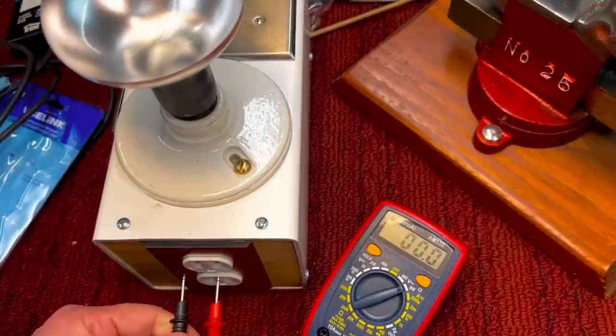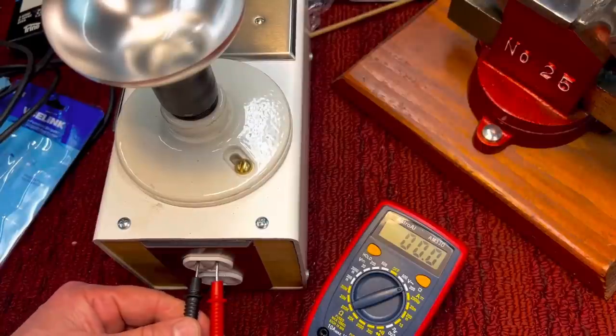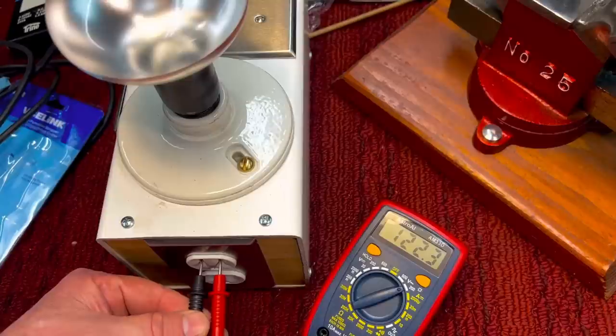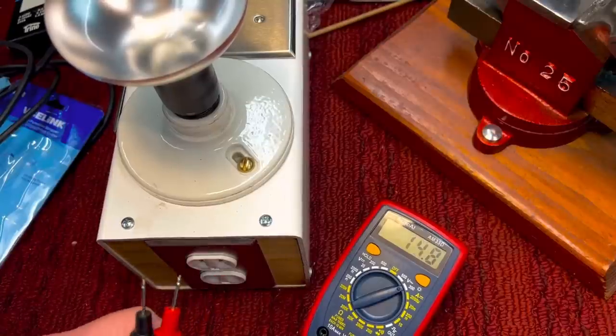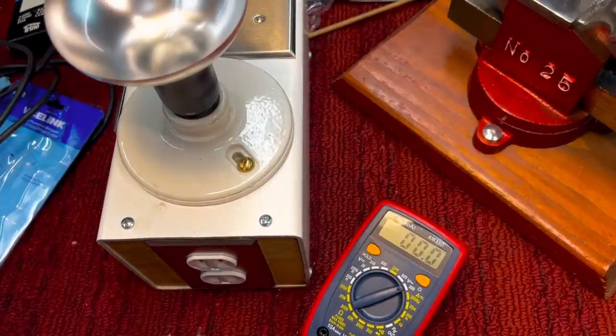Now, if I want to check the voltage coming into the house, I could check just like this here and you could see here at 122 volts, which is very good AC. So that's one reason everybody needs one of these.